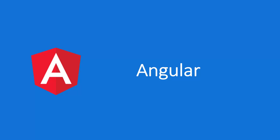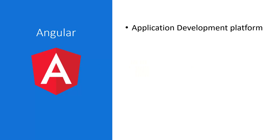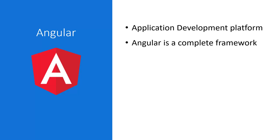Let's talk about what Angular is. Angular is an application development platform — it means this is a platform that helps us to build or develop applications. There are several types of applications that we can build using Angular, but for now just assume that this is a software development platform that is used to build several types of applications.